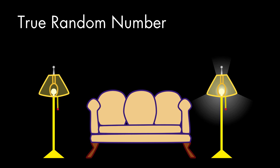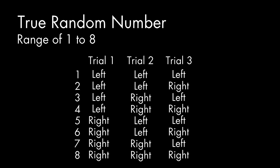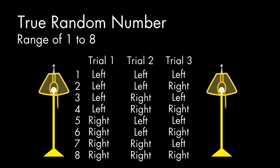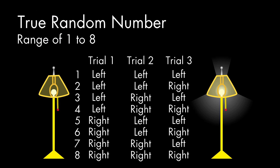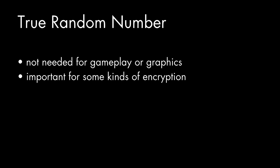If we wanted a random number in a particular range, we could run multiple trials. If, for example, we wanted a random number between 1 and 8, we could run 3 trials and consult the chart shown. The random number circuit in some processors works like these two lamps, and the output it produces is truly random, unless our understanding of particle physics has some fundamental errors. For gaming, or graphics, or most of the places where we currently use pseudo-random numbers, these truly random numbers are overkill, but they add an extra layer of assurance for computer security.